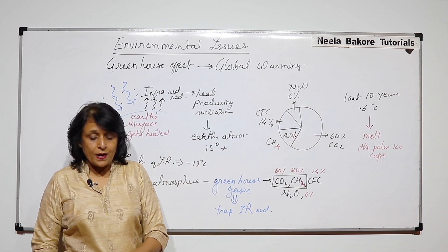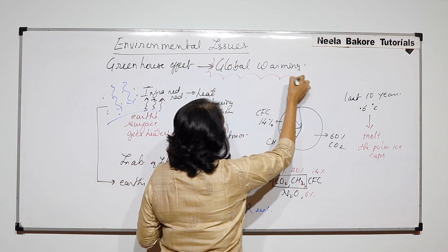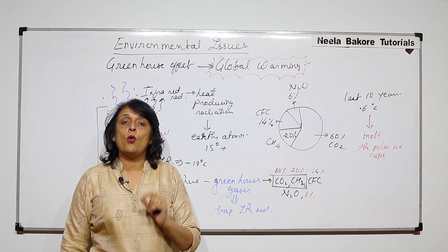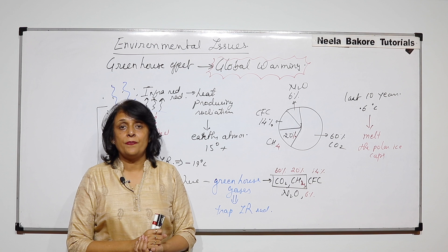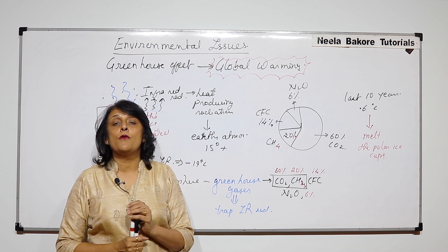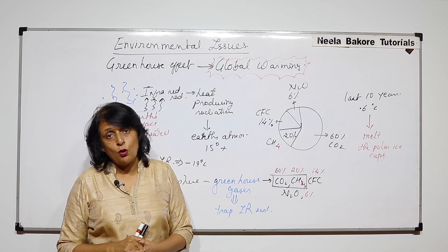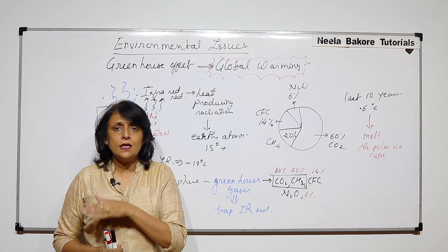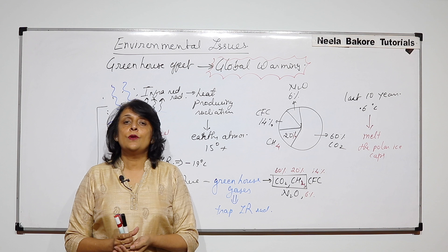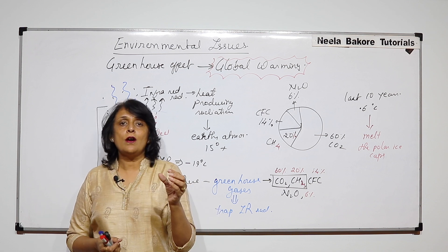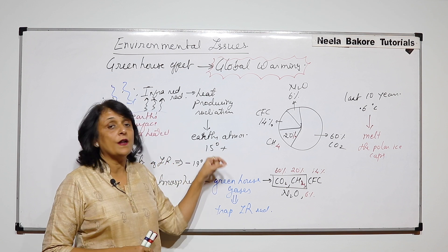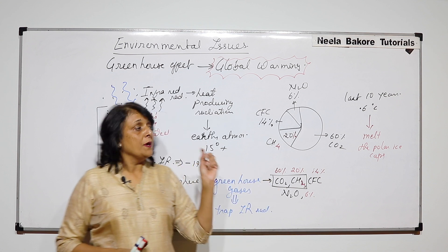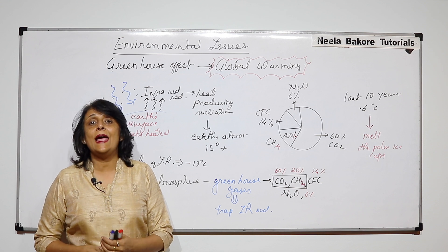This increase in temperature is happening everywhere, and that is why we call it global warming. If the polar ice caps melt, two things happen: first, the water level in the oceans is going to increase because all that water will enter the oceans. Second, polar ice caps are responsible for maintaining the weather cycle, so the weather cycle will also get affected. We are already seeing this — summers have increased, the rainy season is very short, and winters are very short.